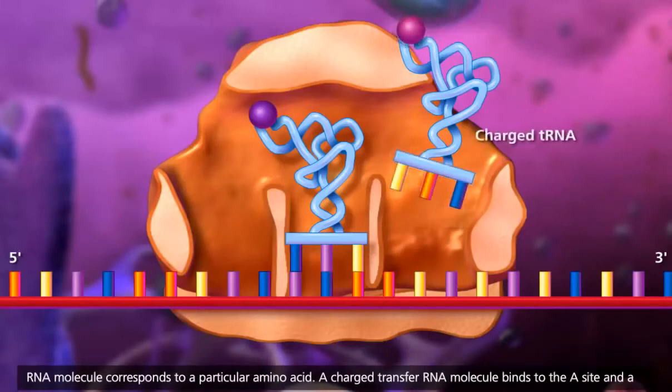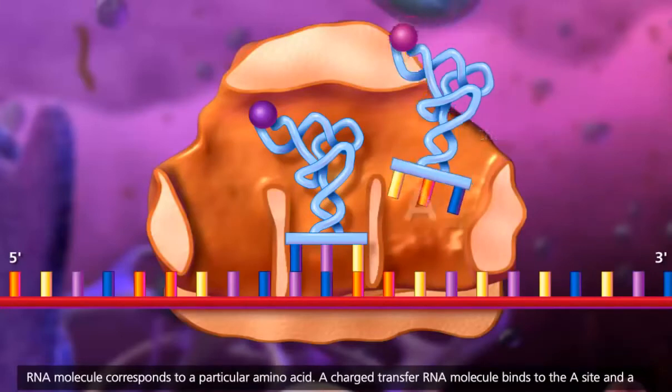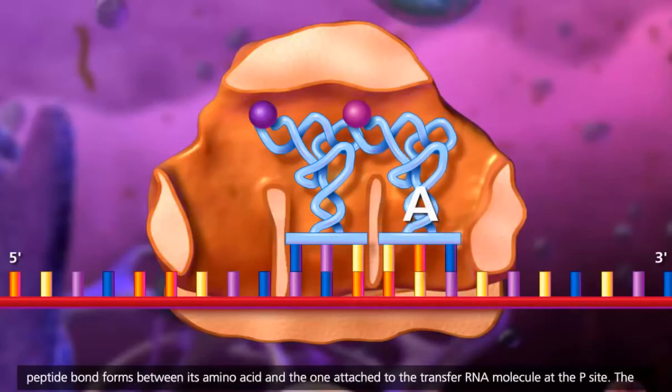A charged transfer RNA molecule binds to the A site and a peptide bond forms between its amino acid and the one attached to the transfer RNA molecule at the P site.